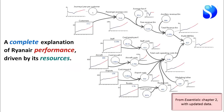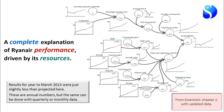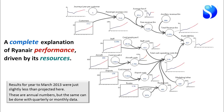The reason we use this example is because so much of the business data is actually available — these resources are all reported by the company at year end and quarter end. You can find out how many staff, aircraft, airports, and routes the company had, which is not always the case with company reports. So if we put this together, what we've got is a complete explanation of Ryanair's performance driven by its resources. These are annual numbers, but the same analysis can be done with quarterly or monthly data.